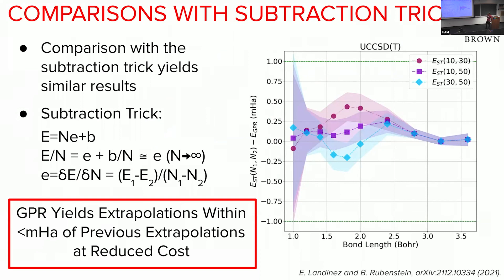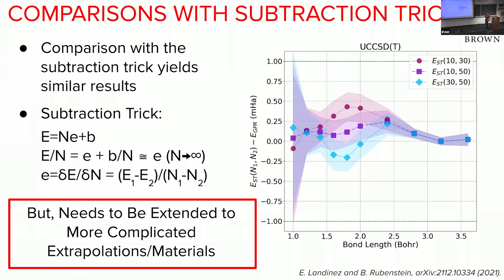These results show that extrapolation to the thermodynamic limit is achievable at reduced cost, using only chains of 10 to 30 atoms. However, hydrogen chains are relatively simple — governed just by atom count and spacing — so this is not an incredibly difficult system. The real goal is to apply this to much harder systems, those without regular geometries, and for which no easy analytic extrapolation expressions exist. That would be the real power: extrapolating for mixed interfaces where the correct extrapolation form is unknown.